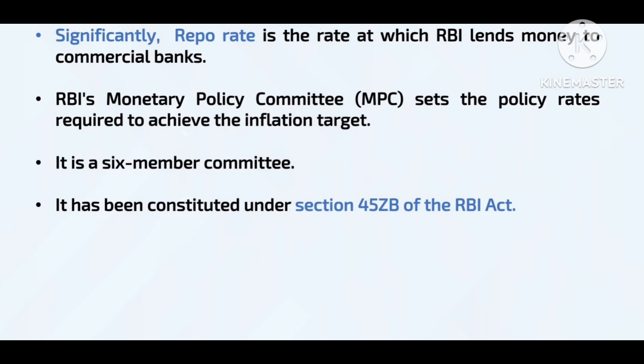The repo rate is the rate at which RBI lends money to commercial banks. Commercial banks take loans from RBI when they don't have sufficient funds — for example, when customers need to withdraw 10 lakhs or 2 lakhs and the bank doesn't have enough cash. To maintain banking activities, commercial banks take loans from RBI, and the interest rate on that loan is called the repo rate.